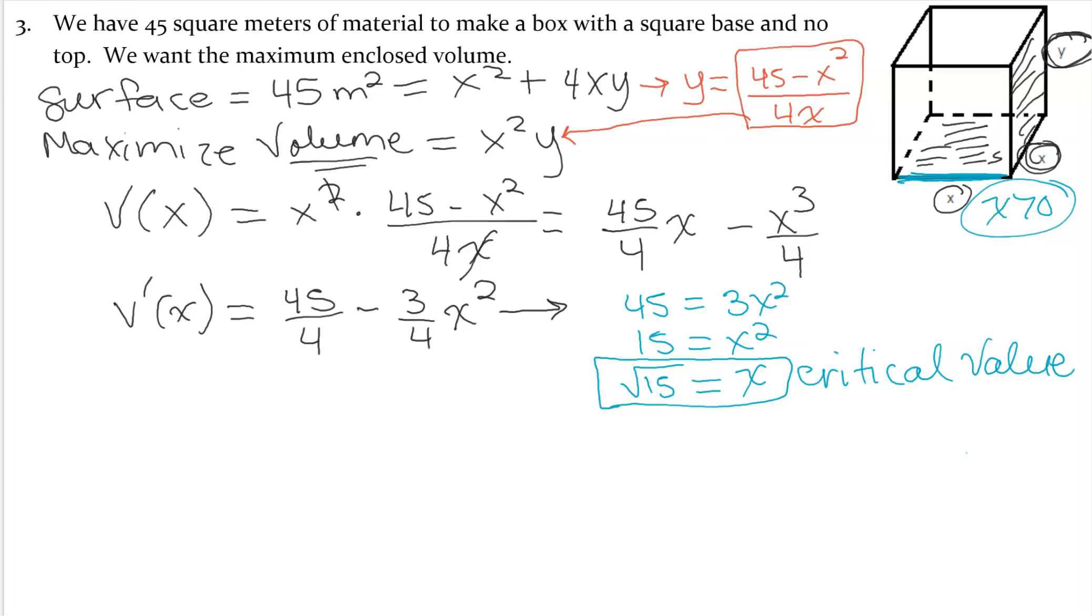Now to confirm that that will give you the maximum, we would go ahead and take the second derivative. So then the second derivative of x is—the derivative of a constant is 0—bring the 2 down, you would divide that by 4, so we would have negative 3 over 2 x.